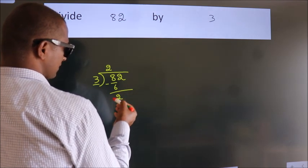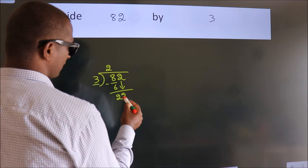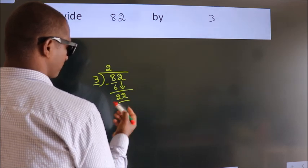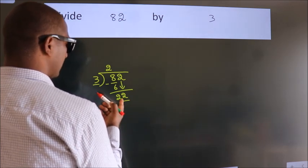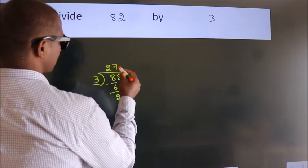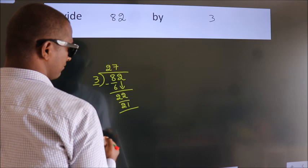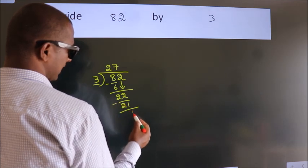After this, bring down the next number, so 2 down, so 22. A number close to 22 in 3 table is 3 7s, 21. Now we subtract, we get 1.